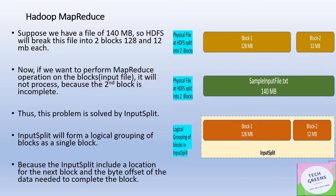That's why the input split combines them together and presents one logical representation. In the MapReduce world, the input split for this file of 148 MB — which has two blocks — forms a logical grouping of these two blocks as a single unit. There would be one input split, and this input split includes the location for these blocks and the byte offset of the data needed to complete the blocks. This individual input split then goes as input to the mapper.